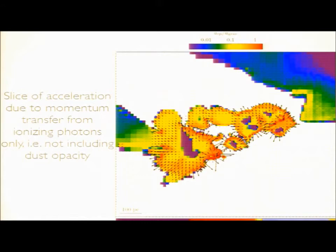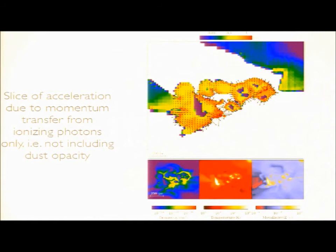Just to visually show where the radiation pressure actually takes effect — it's a non-local process, it transmits the momentum from the ionizing radiation to where it is absorbed. This is a slice of radiation pressure, and you can see that the radiation pressure is greatest at the ionization front. These are individual HII regions inside the galaxy. You can see this translates into the dense shells created around these stellar clusters, and you can see the supernova feedback happening inside of these HII regions in the metal-rich pockets.